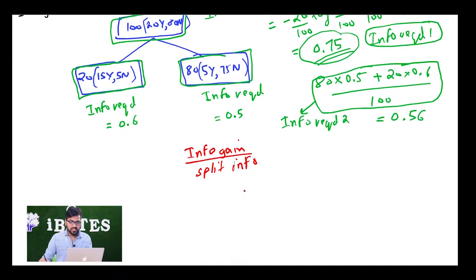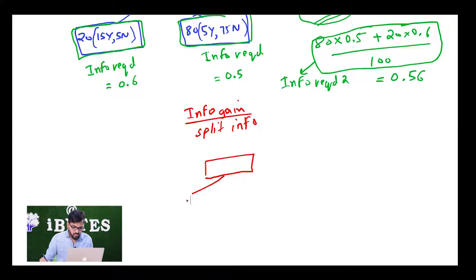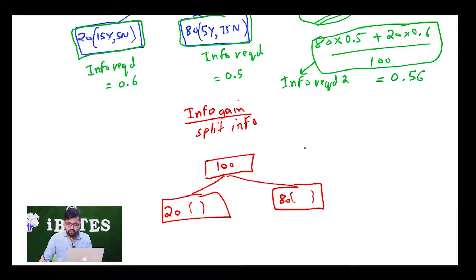Now, let us see what split info is. If I had a split like this which we are repeatedly seeing - we had 20 points over here, 80 points over here, and we had 100 points over here. Split info for this split is going to be minus Di log Di summation. Now, what is Di?